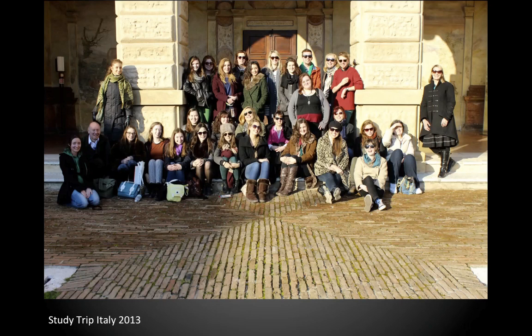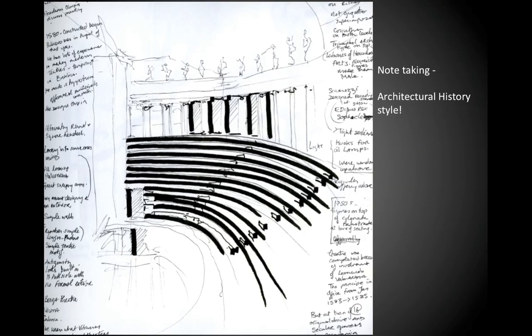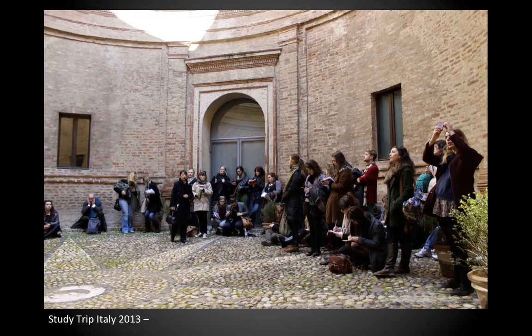Last spring we visited the Palazzo del Te in Mantua, a Mannerist Renaissance palace — this gives you a sense of the size of group you could expect on those trips. You don't draw in History of Art, but I'll show this drawing: a student who came from the National College of Art and Design decided she didn't want to do practical art and wanted to do History of Art. When we were going around Vicenza and Venice she made wonderful drawings in a notebook, some of which we've published in departmental literature. But mostly what students do is make notes in a small notebook about what they are seeing — here's another group in the house of Andrea Mantegna, the Renaissance painter in Mantua.